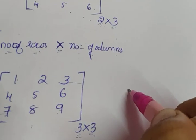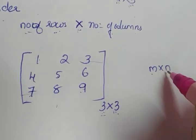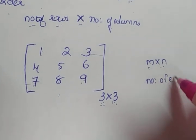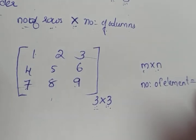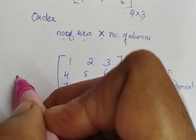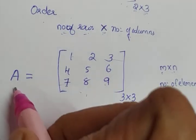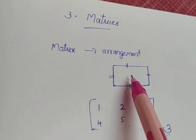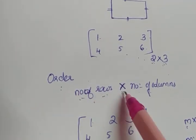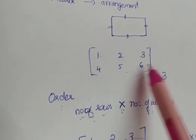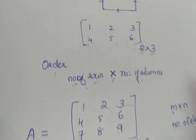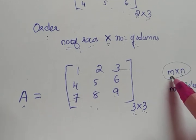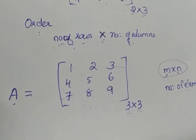In general, if the order of a matrix is m by n, where m stands for number of rows and n stands for number of columns, then the number of elements in the matrix will be equal to m into n. We always represent a matrix using capital letters like capital A, capital B, and so on. So a matrix is a rectangular arrangement of numbers or functions, with order as number of rows by number of columns, and number of elements equal to m into n.